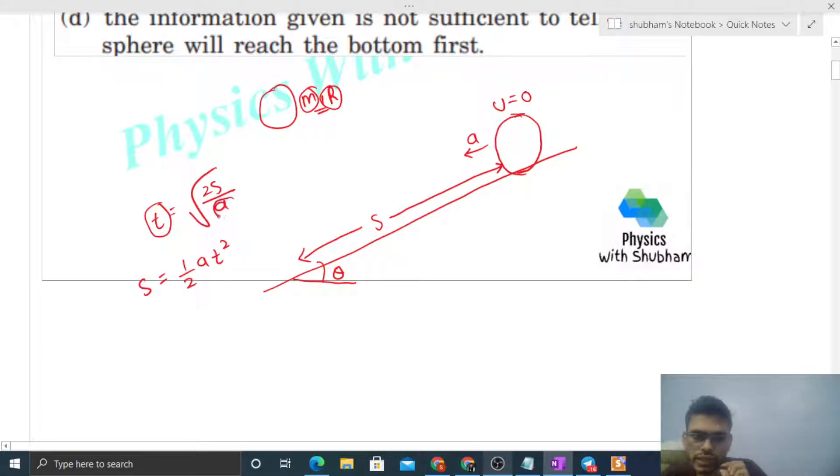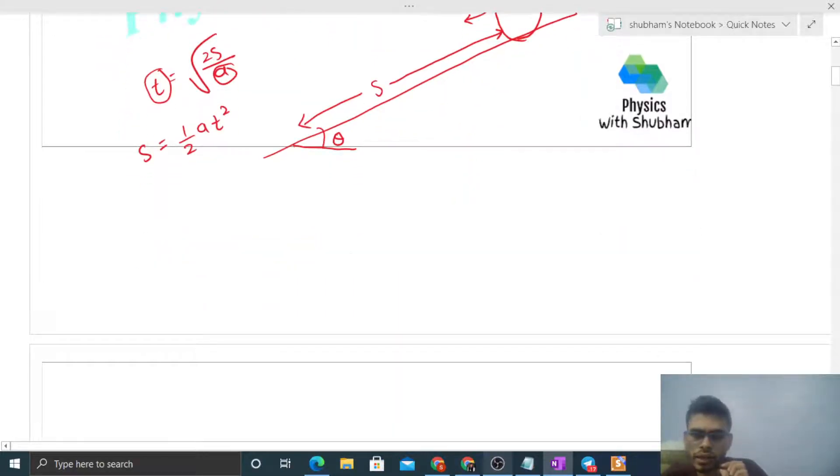To find acceleration parallel to the incline surface, we need to draw the free body diagram of this sphere. We have mg acting downward with components mg cos theta perpendicular to the incline surface and mg sin theta parallel to the incline surface, plus the normal reaction.